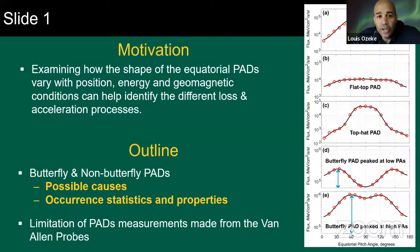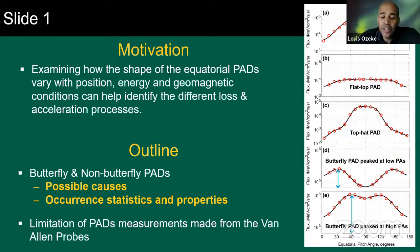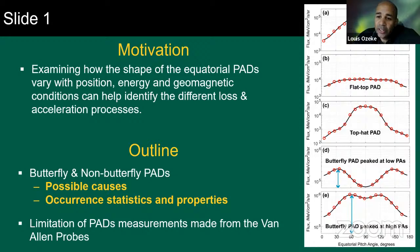The motivation for examining these pitch angle distributions is that if you look at how the pitch angle distributions vary as a function of position, energy, geomagnetic activity, you can often get some important clues about what different processes may be occurring at the different locations responsible for the sudden loss and acceleration. Some of the commonly observed pitch angle distributions during the Van Allen probe mission are illustrated in the figure on the right here. The x-axis in each of these panels is the equatorial pitch angles of the electrons in degrees, and the y-axis is simply the electron flux.